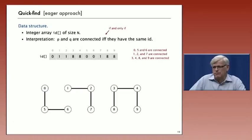Now we'll look at our first implementation of an algorithm for solving the dynamic connectivity problem called quick-find. This is a so-called eager algorithm for solving the connectivity problem. The data structure we're going to use to support the algorithm is simply an integer array indexed by object. The interpretation is that two objects P and Q are connected if and only if their entries in the array are the same.